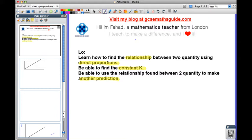Alright, so what are direct proportions anyway? First of all, I just want to take a look at my learning objectives. Using direct proportions we're going to learn how to find a relationship between two quantities. So in a second I'm going to show you that when you compare two quantities there might be a relationship between them. And to find that relationship, we use direct proportions.